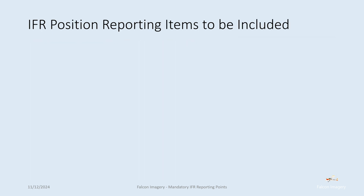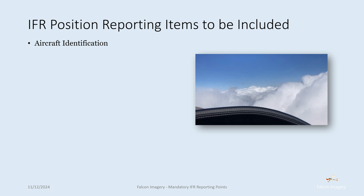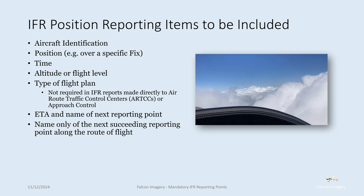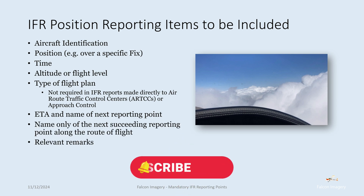IFR position reporting items to be included in the report: the aircraft identification or tail number, the position of the aircraft relative to a specific fix, the time, the altitude or flight level the aircraft is flying, the type of flight plan — though it's not required in IFR reports made directly to an air route traffic control center or approach control — the estimated time of arrival and name of next reporting point, the name only of the next succeeding reporting point along the route of flight, and any relevant remarks.